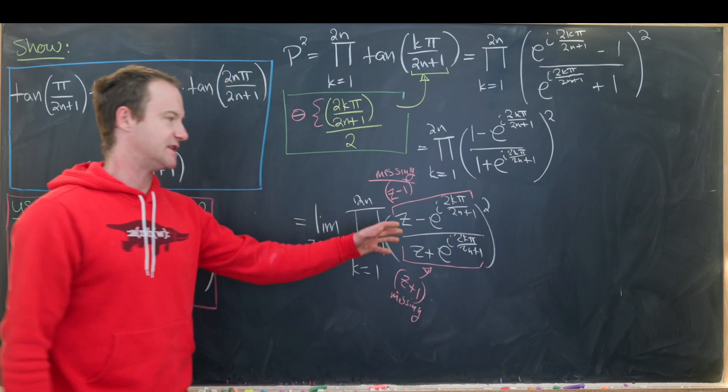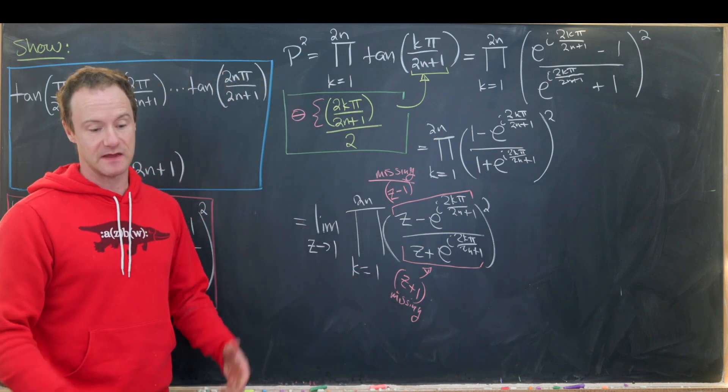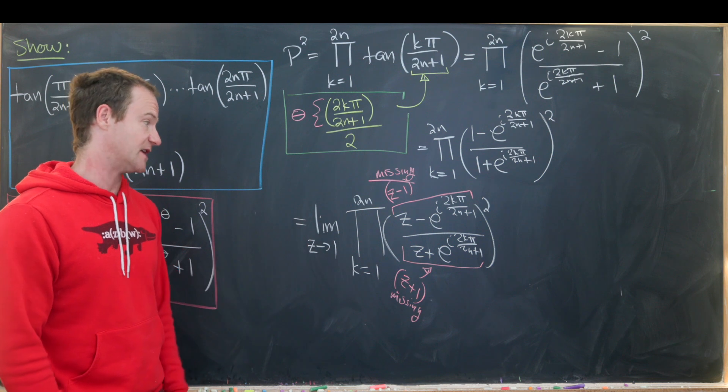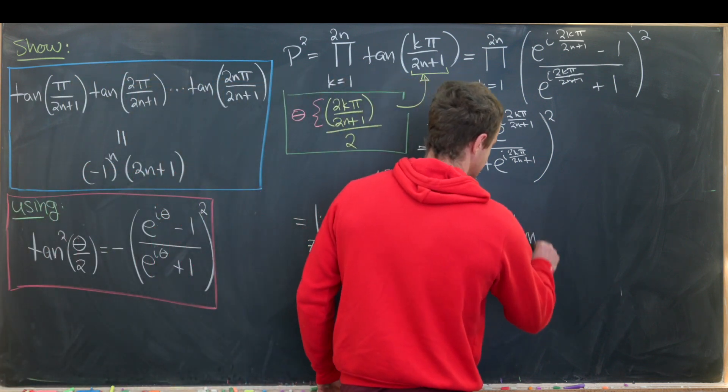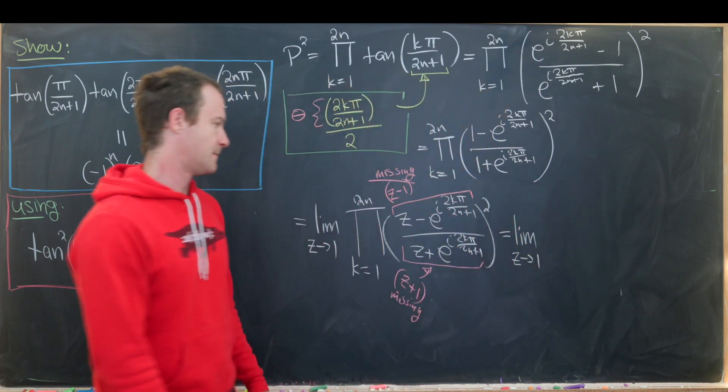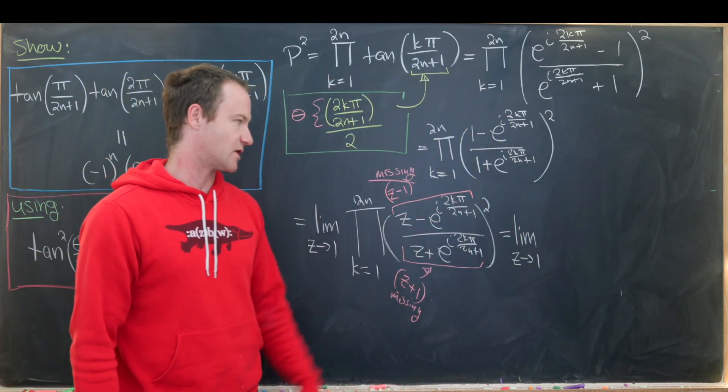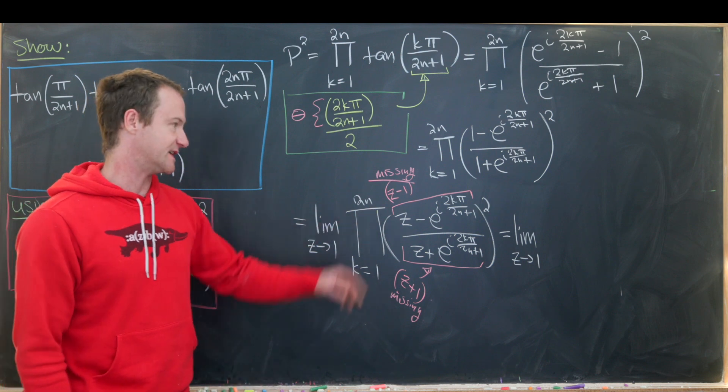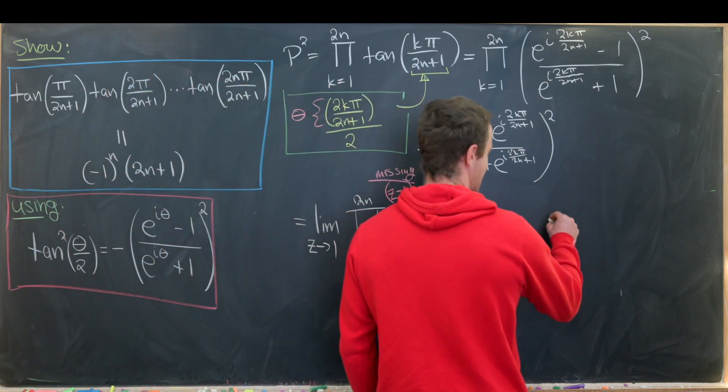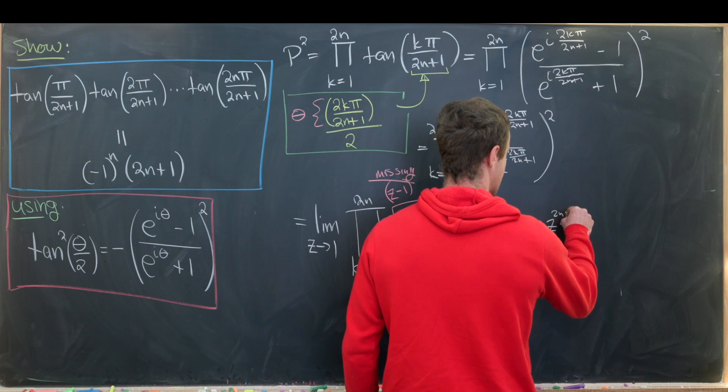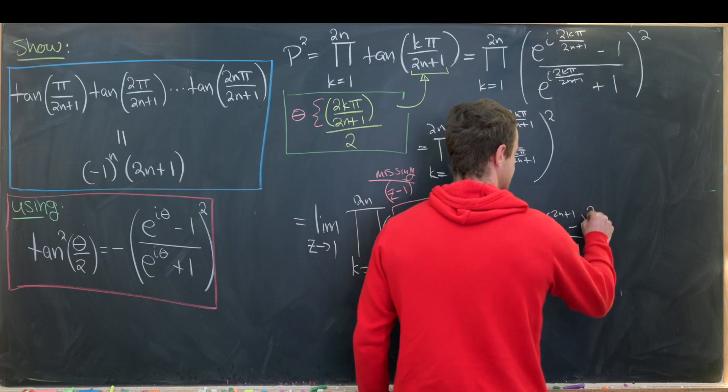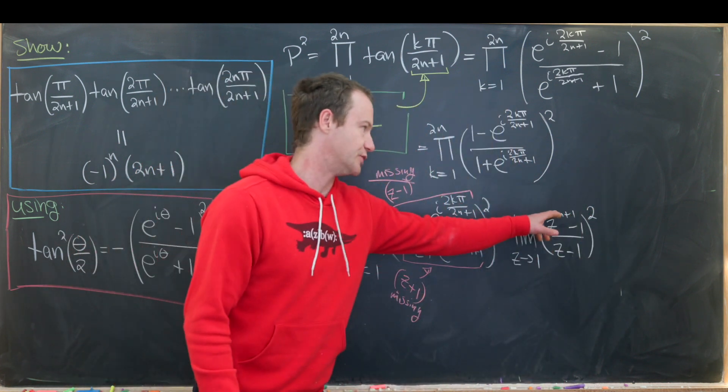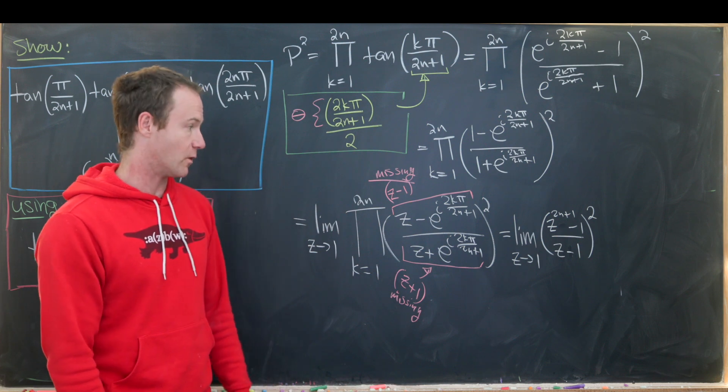So that means when we multiply those up those will not be in this product but we can actually find a pretty nice closed form without those. So let's do that. So this is going to be the limit as z goes to 1. Like I said this numerator is all 2n plus 1 roots of unity except for z minus 1 that means it's of the form z to the 2n plus 1 minus 1 over z minus 1 quantity squared.